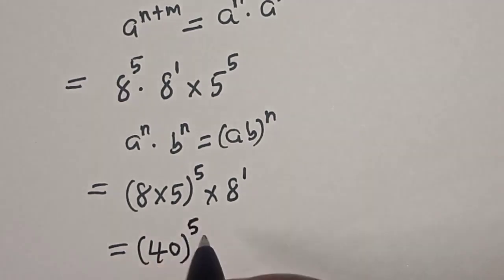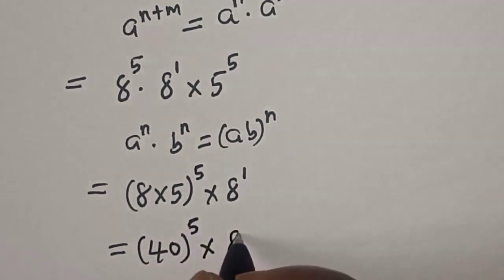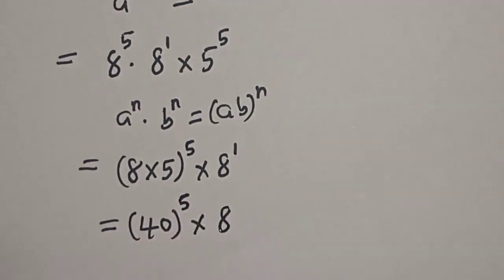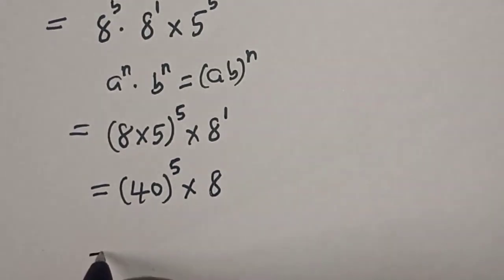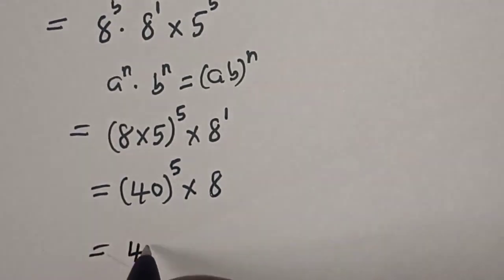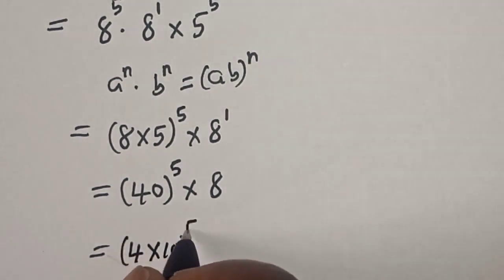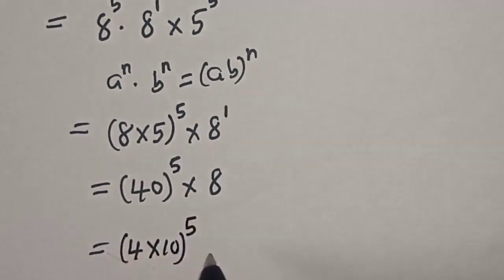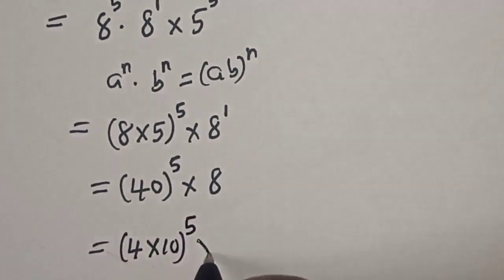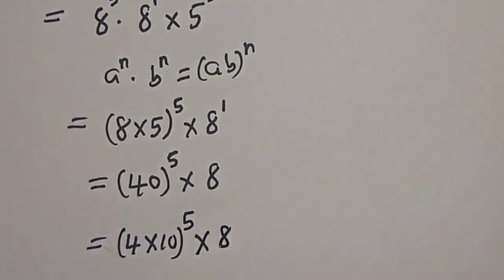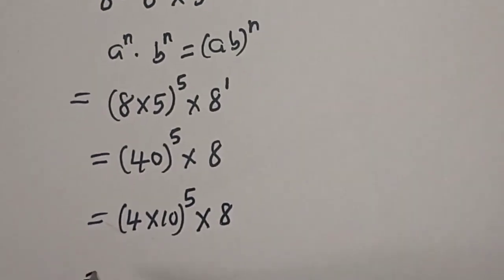8 times 5 is equal to 40, so we have 40 to the power of 5, multiplied by 8. And 40 is also 4 times 10, so this becomes 4 times 10 raised to the power 5, multiplied by 8.